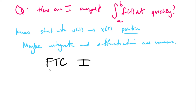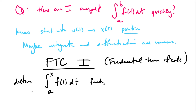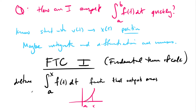The Fundamental Theorem of Calculus Part 1 tells us that integrating and differentiating are opposites. If you define a function that starts at some number a and goes up to some value x — the integral from a to x of f of t dt — this is a function that outputs areas. You tell me where x is, and that function tells me the area underneath f of t between a and x.